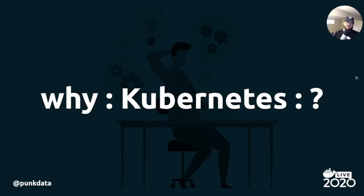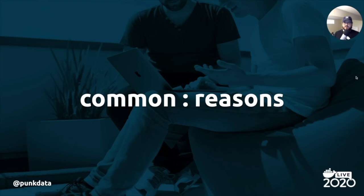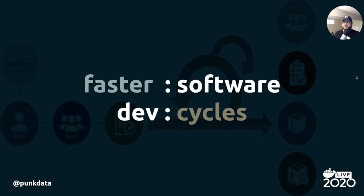A lot of folks ask me, why would I use Kubernetes? One reason is if you're implementing continuous integration, continuous delivery, or DevOps practices — Kubernetes is a great way to automate some of those principles within your software development processes. It's an excellent platform to help you with your CI/CD and DevOps practices, and it'll help you build software faster and more consistently.